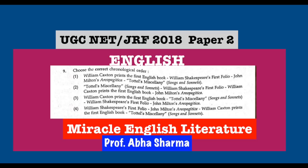Question number 9: Choose the correct chronological order. You can easily identify from all four choices that William Caxton printed the first English book, Tottel's Miscellany. Just during the time of the Renaissance, Caxton invented a printing press and published Tottel's Miscellany, written by Surrey and Wyatt, which is said to be the very first volume of the Renaissance period. Then, of course, William Shakespeare's first folio, and then John Milton's Areopagitica — which is against the banning of the printing press.